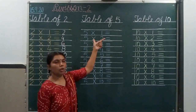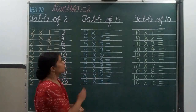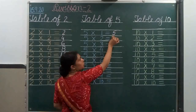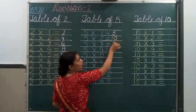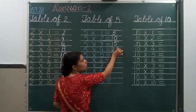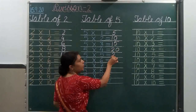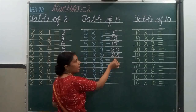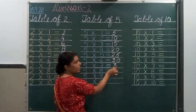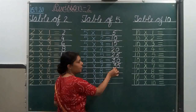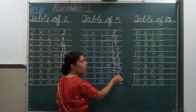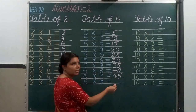Now come to the table of 5. 5 1's are 5, 2 5's are 20, 5 5's are 25, 5 6's are 30, 5 7's are 35, 5 8's are 45, 5 10's are 15.